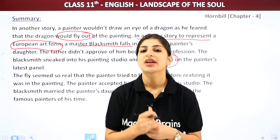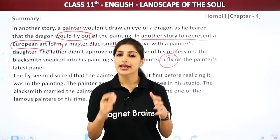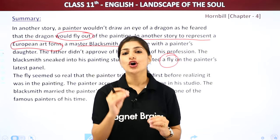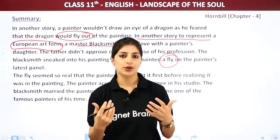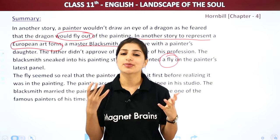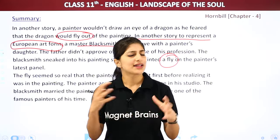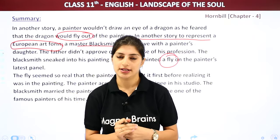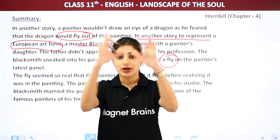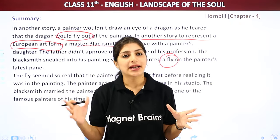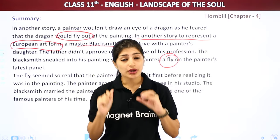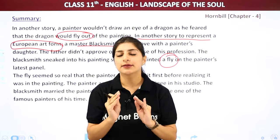Yahan pe European painting samajhana chahte hai, ek story ke through. Yahan pe unhone bataya hai ki Quentin Metzis naam ka ek blacksmith tha, ek lohar tha. Aur use ek bahot famous painter ki beti se pyaar ho gaya tha. Lekin jo painter tha, unhone unka relationship accept nahi kiya, kyunki woh is type ki profession — ek lohar se — apni beti ki shaadi nahi karana chahte tha. Toh blacksmith ne kya socha: woh sneak karke chup-chaap painter ke studio mein gaya, jahan unki latest painting rakhi thi, jis pe woh kaam kar rahe the, aur uspe jaake unhone ek fly bana di, ek makkhi bana di, jo bilkul real, bilkul asli dikh rahi thi.